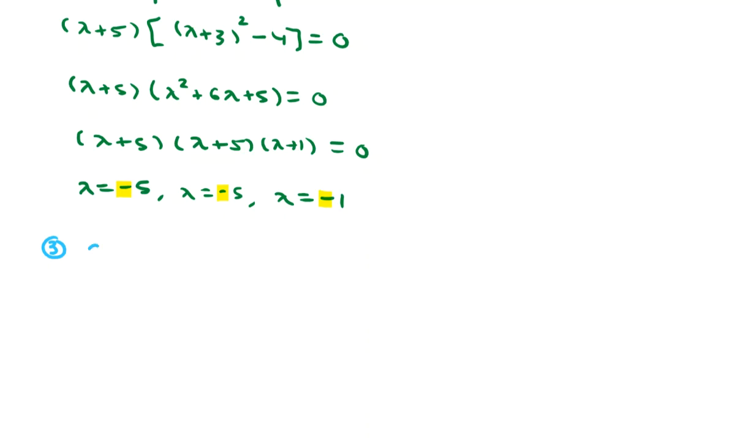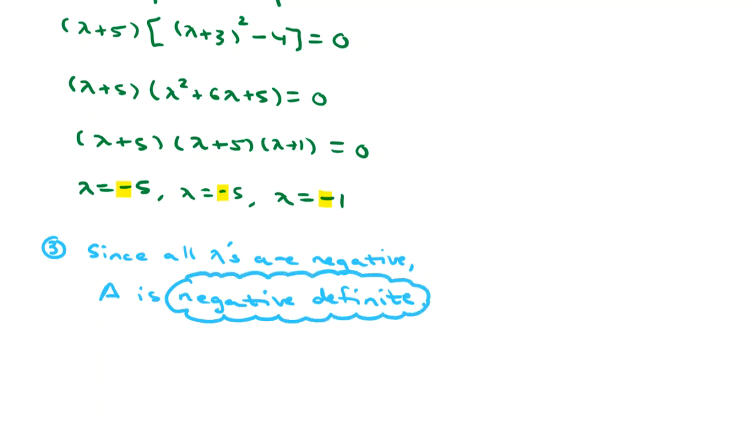Alright, so I'll put it this way. Since all lambdas are negative, we'll say A is negative definite. Alright, I hope this definitely made sense. If not, feel free to reach out to me. Otherwise, thanks for watching. I'll catch you in the next video. Have a good one.